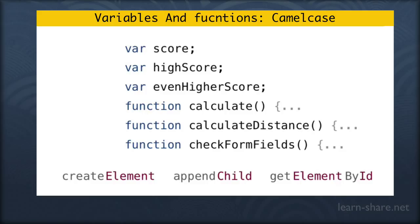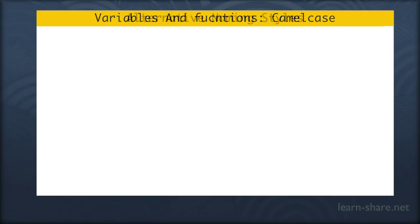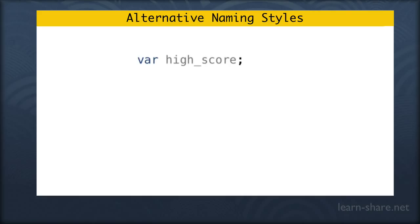In other languages, their style guidelines might suggest using underscores to separate words instead. Or if it's strongly typed, they might suggest you prefix your variables with an abbreviation to represent the type of information in that variable, like whether it is a string or an integer.